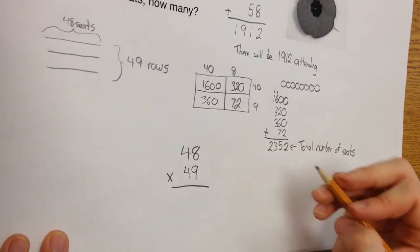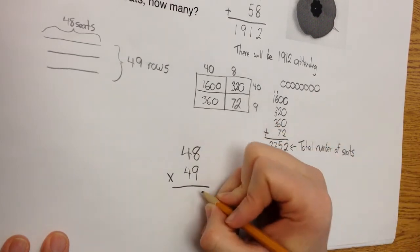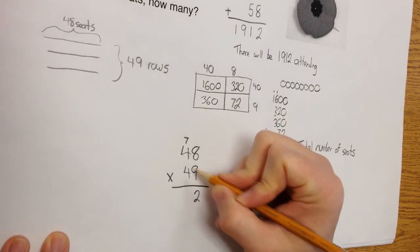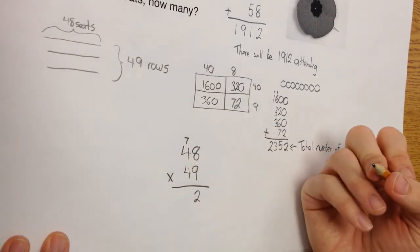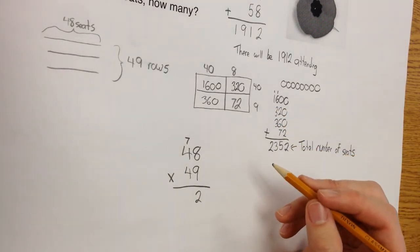When I'm doing the algorithm way, I always start with the 1s column. And that's 9 times 8. We know from above 9 times 8 is 72. The 7. Now I do 9 times 4. We talked about that again before. And that is 36. And I add this number here. So 36 plus 7 is 43.